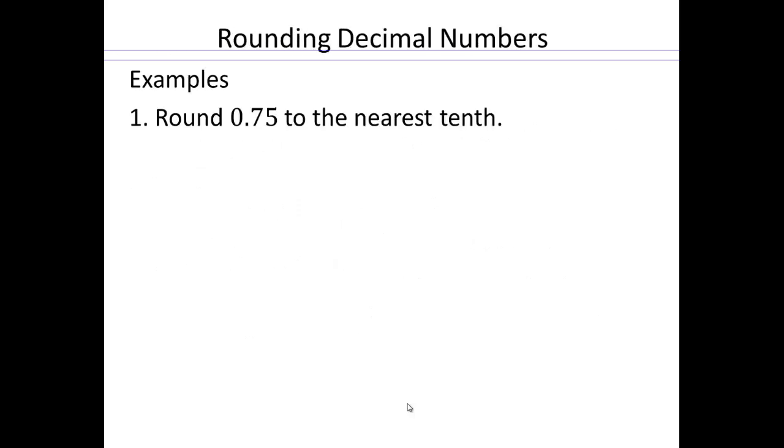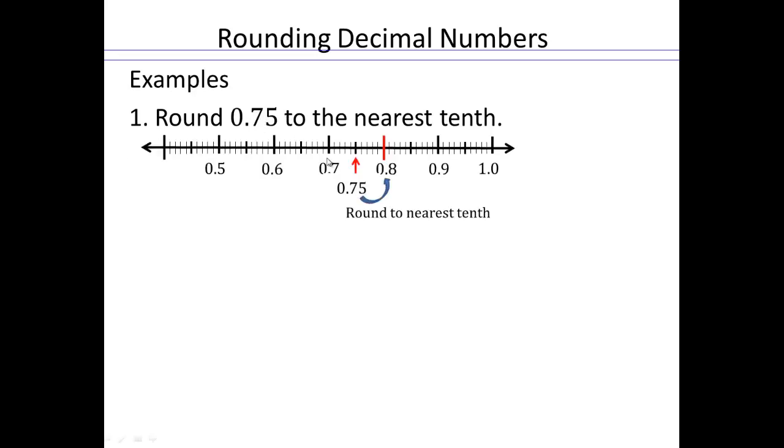If I asked you to round this to the nearest tenth, the tenth place is 0.75. And 0.75, the number closest to that is this one. This is equally far apart, but the convention is to go to the next digit, on the right side.